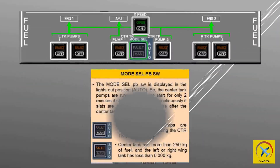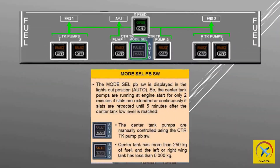The mode selector push button switch on the cockpit overhead fuel panel is displayed in the lights-out position — auto. In auto mode, the center tank pumps run at engine start for only 2 minutes if slats are extended, or continuously if slats are retracted, until 5 minutes after the center tank low level is reached.